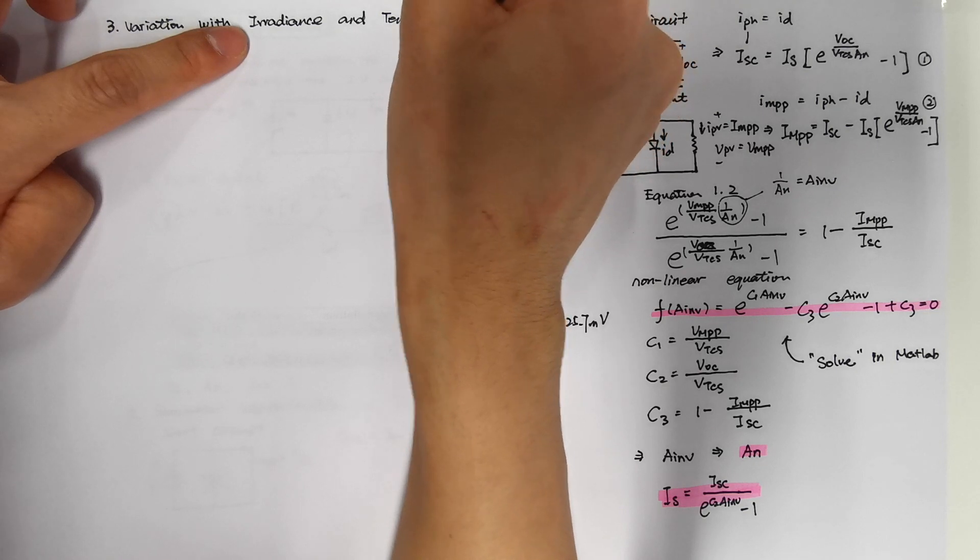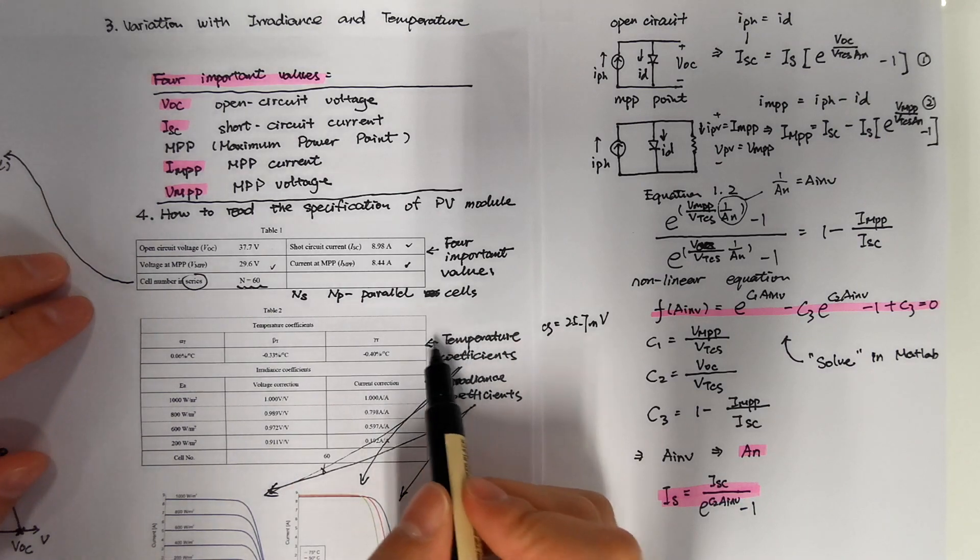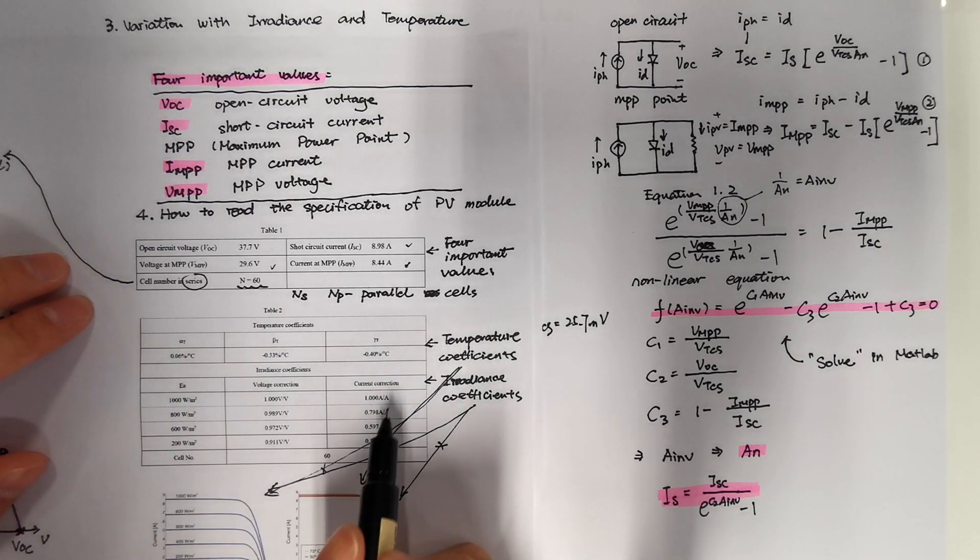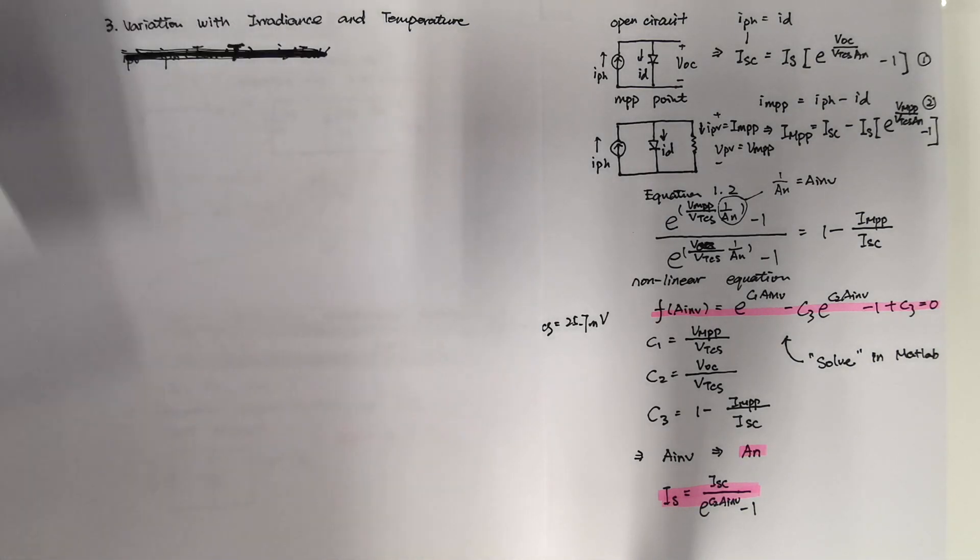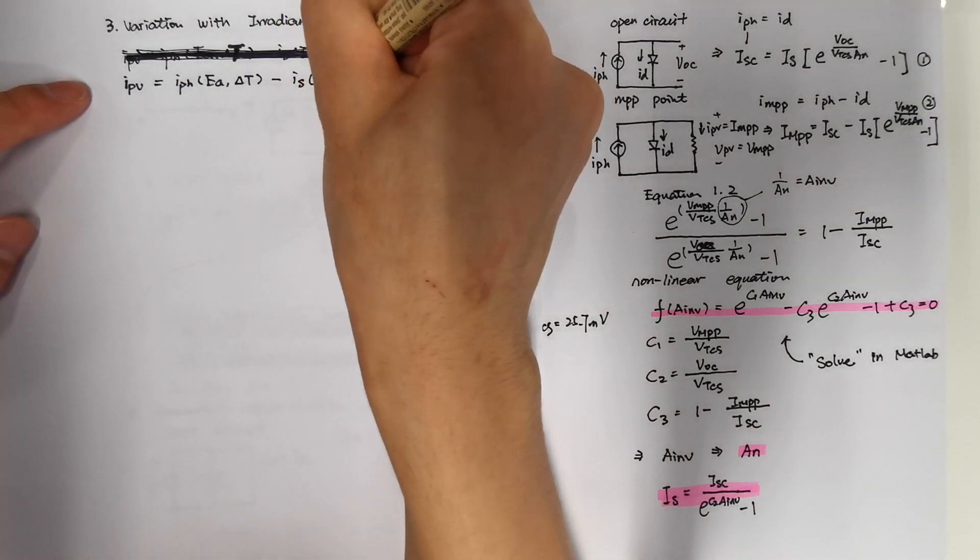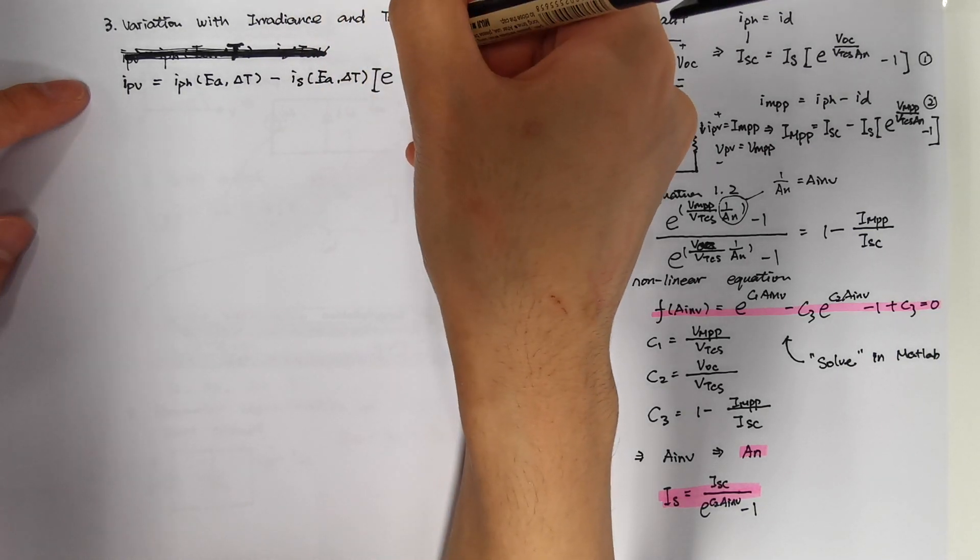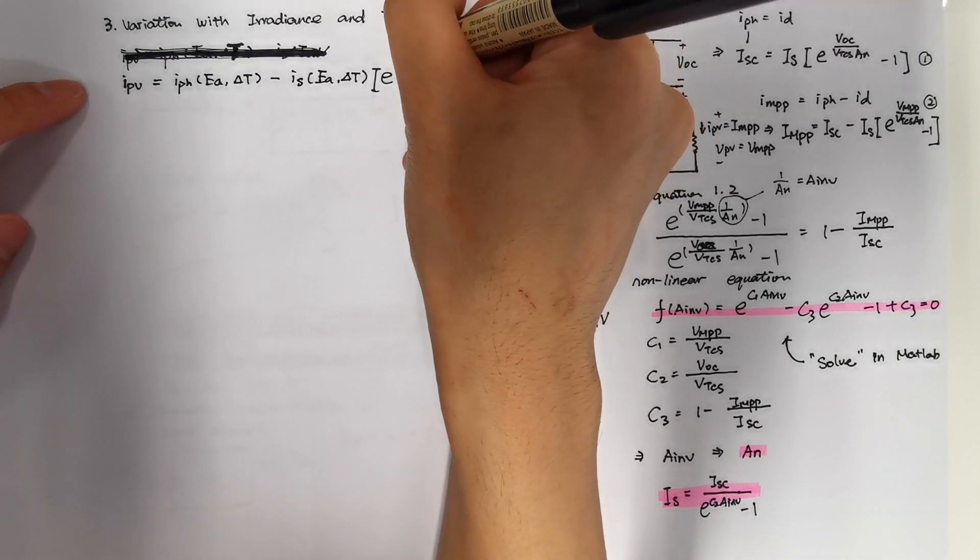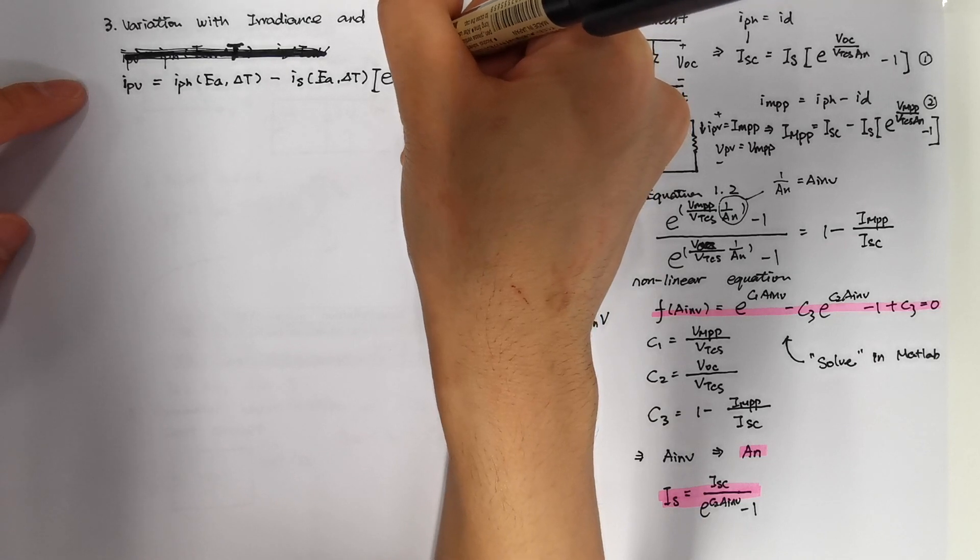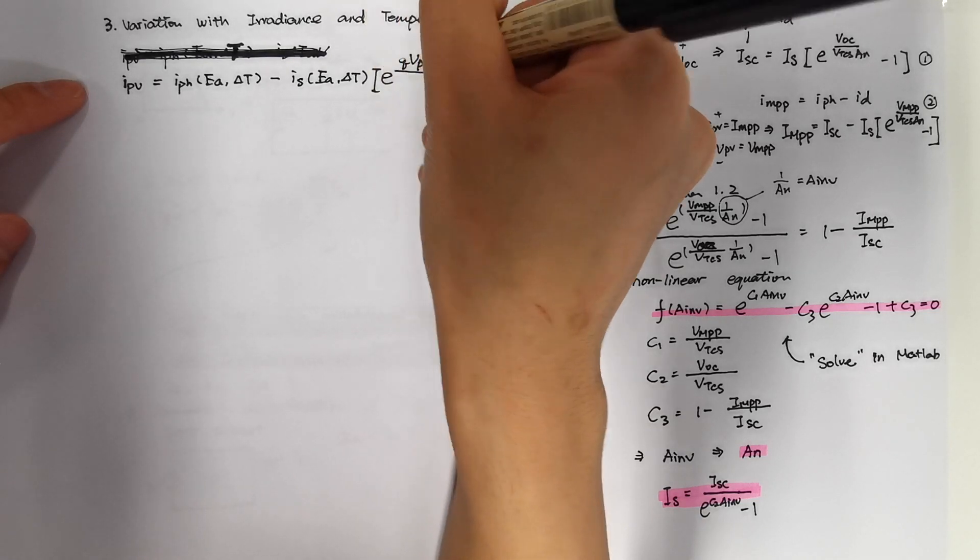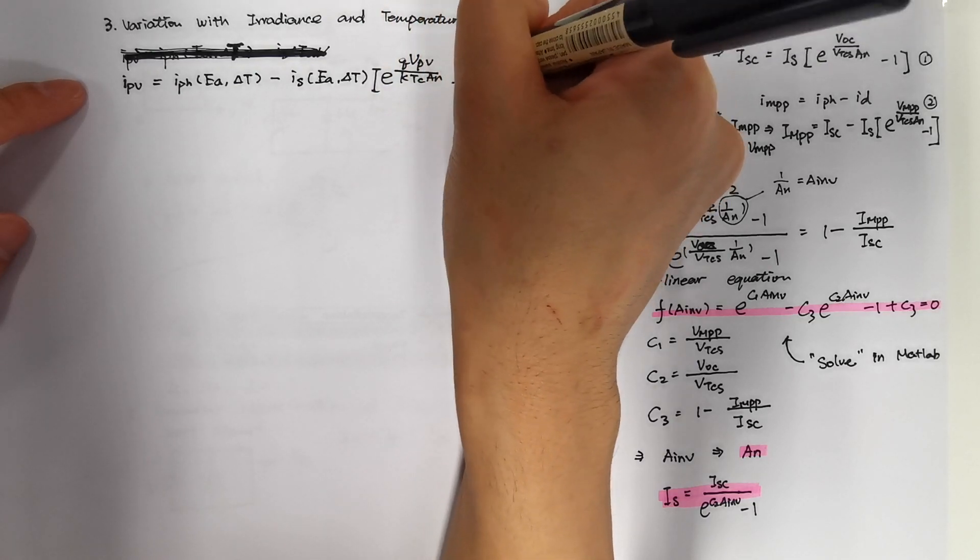Now we know the equation at standard test condition. We can add on the variation with irradiance and temperature. The temperature and irradiance coefficients can be found in your data sheet. And I've pointed out in the last video. Basic concept is you just multiply a coefficient onto the equation.